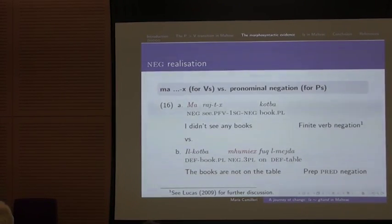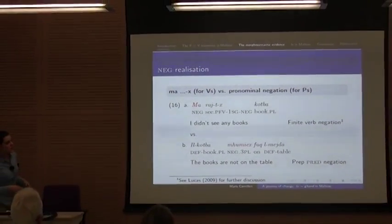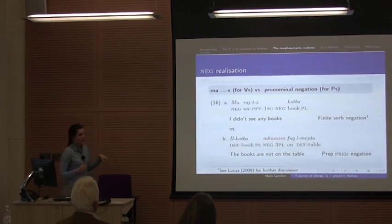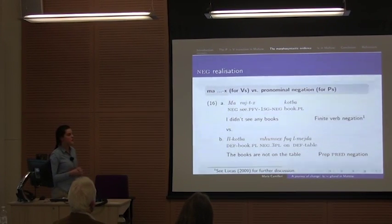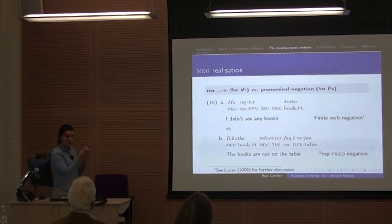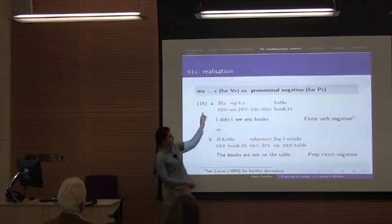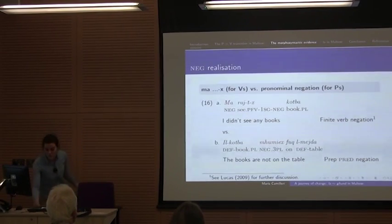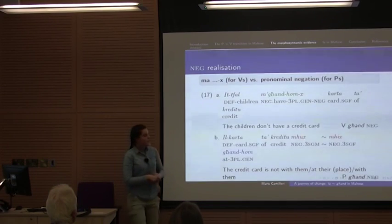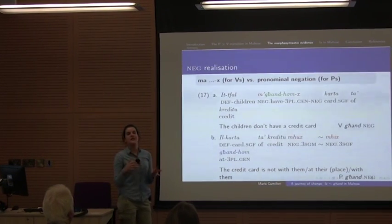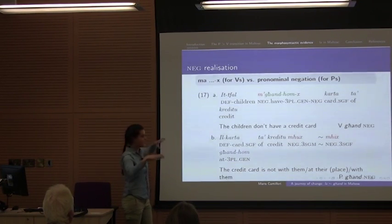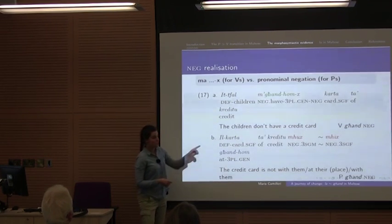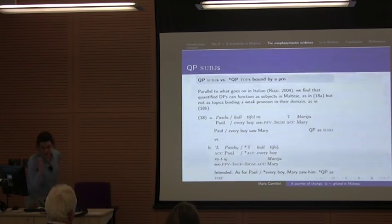Negation realization — I think this is one of the most robust tests. Finite negation in Maltese involves the use of two parts: a 'ma' and a 'sh' attached to the verb. As opposed to negation of a preposition, where you need a pronominal form which includes the 'ma-sh'. I'll just refer to that as pronominal negation. If we insert 'and', we observe that 'and' as a verb — that is, in its possessive use — actually yields the 'ma-sh' attachment just as verbs do. Whereas negation of the locative use of 'and' requires us to use a pronominal form.